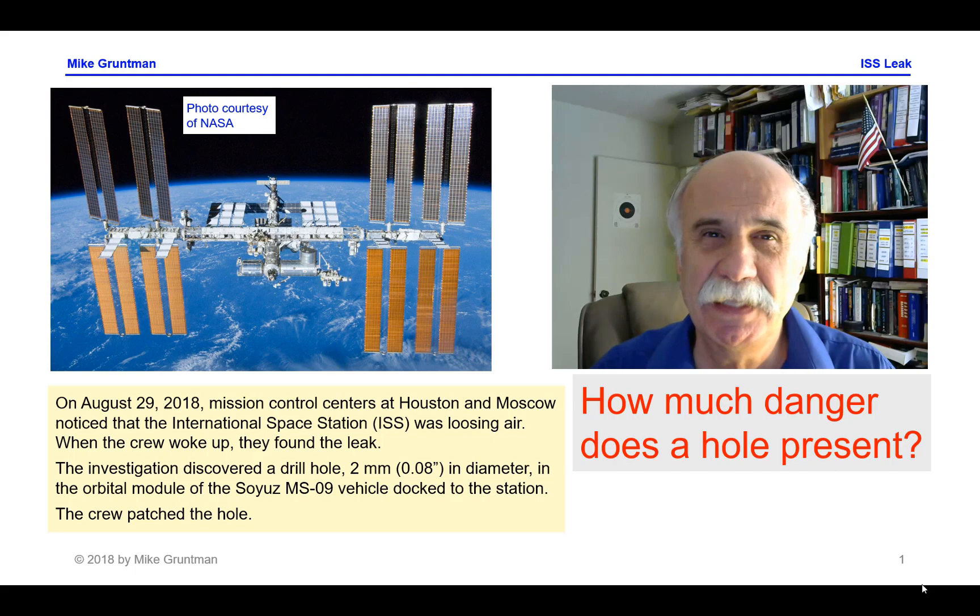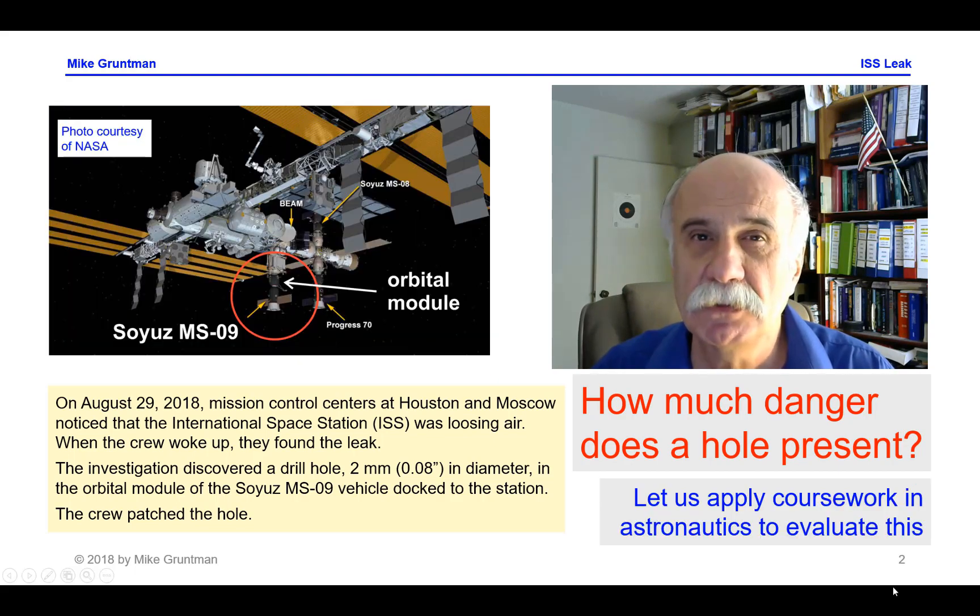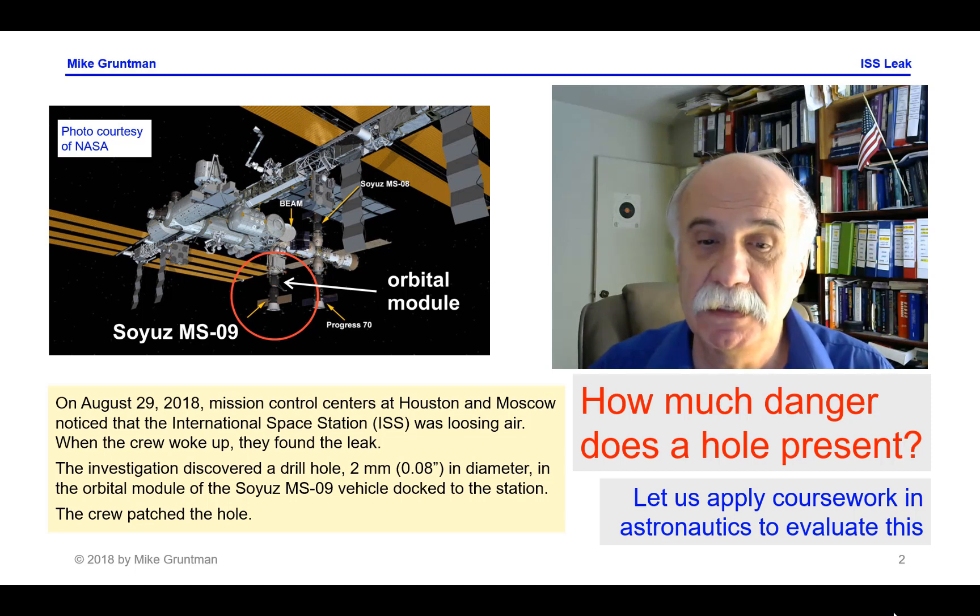On August 29, 2018, Mission Control Centers at Houston and Moscow noticed that the International Space Station was losing air. When the crew woke up, they found the leak. The investigation discovered a drill hole, two millimeters in diameter, in the orbital module of the Soyuz MS-09 vehicle docked to the station. The crew patched the hole.